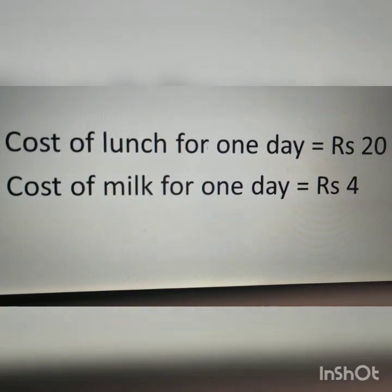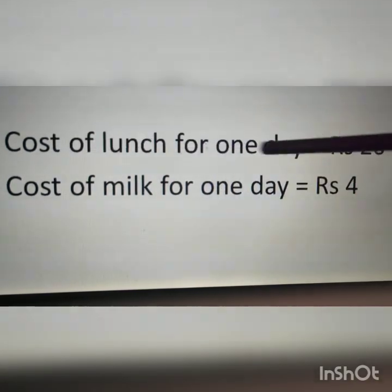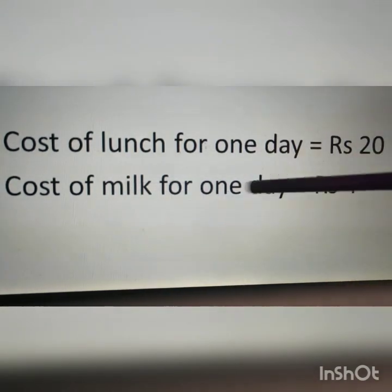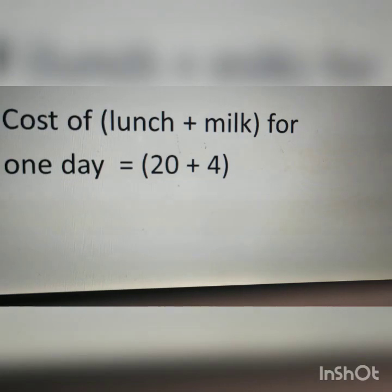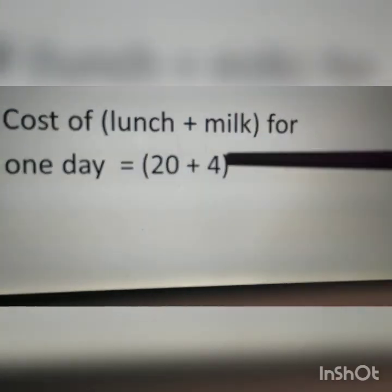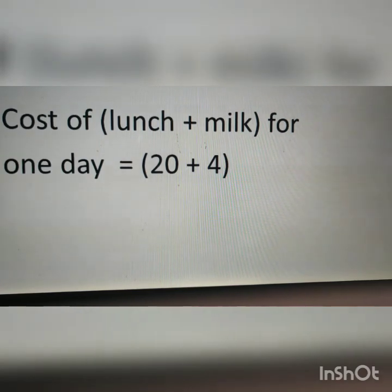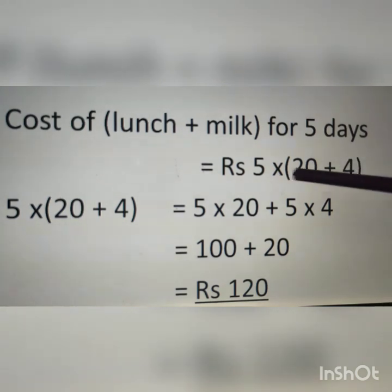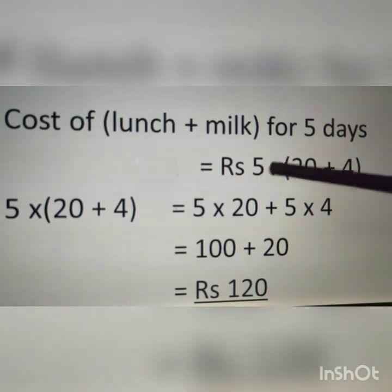From the question, the cost of lunch for 1 day is rupees 20 and the cost of milk for 1 day is rupees 4. Therefore the cost of lunch plus milk for 1 day is 20 + 4. To find the cost for 5 days, we multiply the cost of 1 day by 5. Therefore: 5 × (20 + 4).